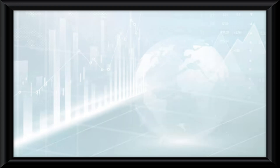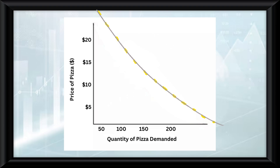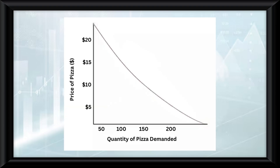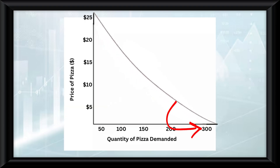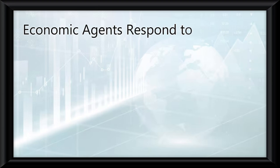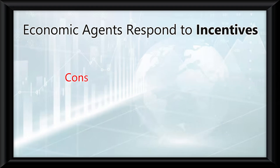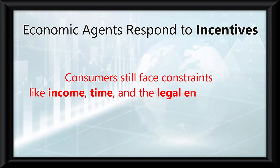But that's not the only thing that can affect demand. What if consumer preferences change or income increases? These factors will cause the entire demand curve to shift, not just movement along it. For example, if people suddenly crave more pizza, the demand curve will shift to the right, meaning more pizza will be demanded at every price. Conversely, if pizza falls out of favor, the curve will shift to the left. It's also crucial to understand that economic agents respond to incentives — like a buy one get one free pizza deal, which is an incentive for consumers to buy more. However, consumers still face constraints like income, time, and the legal environment, which can limit their ability to respond to these incentives.